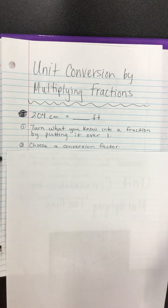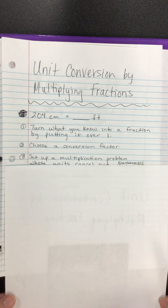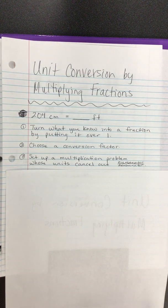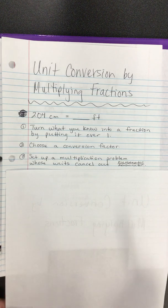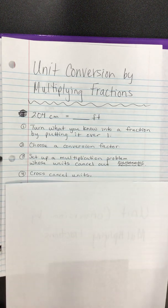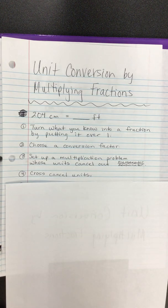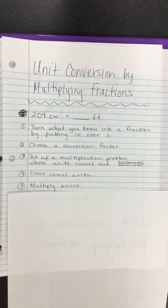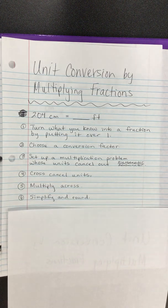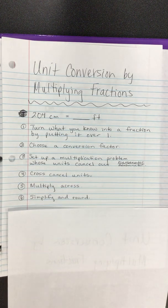Then we'll set up a multiplication problem, multiplying fractions. We will turn the conversion factor into a fraction, and then we will actually solve the problem by cross-canceling units we don't need, multiplying across, simplifying, and rounding according to the rules that the teacher gives you.